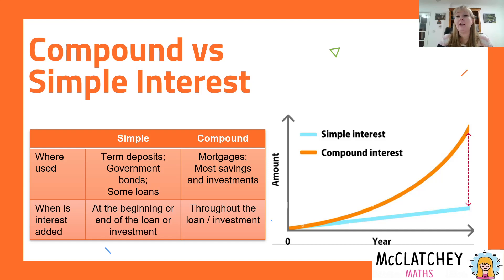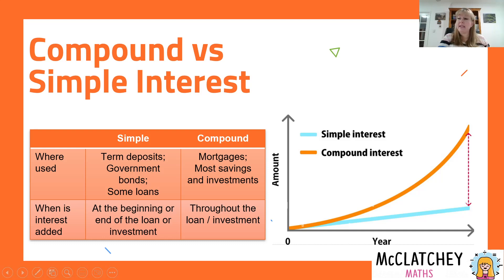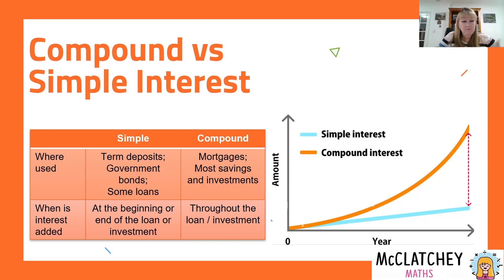On the other hand, mortgages are a type of compound interest. Most savings accounts — like your transaction account where your pay goes in and you take money out — use compound interest as well. With simple interest, sometimes it's added at the very beginning: calculated for the agreed period and added upfront. In the case of a loan, they might calculate that interest at the beginning, add it onto the loan, and then you pay it off in repayments.